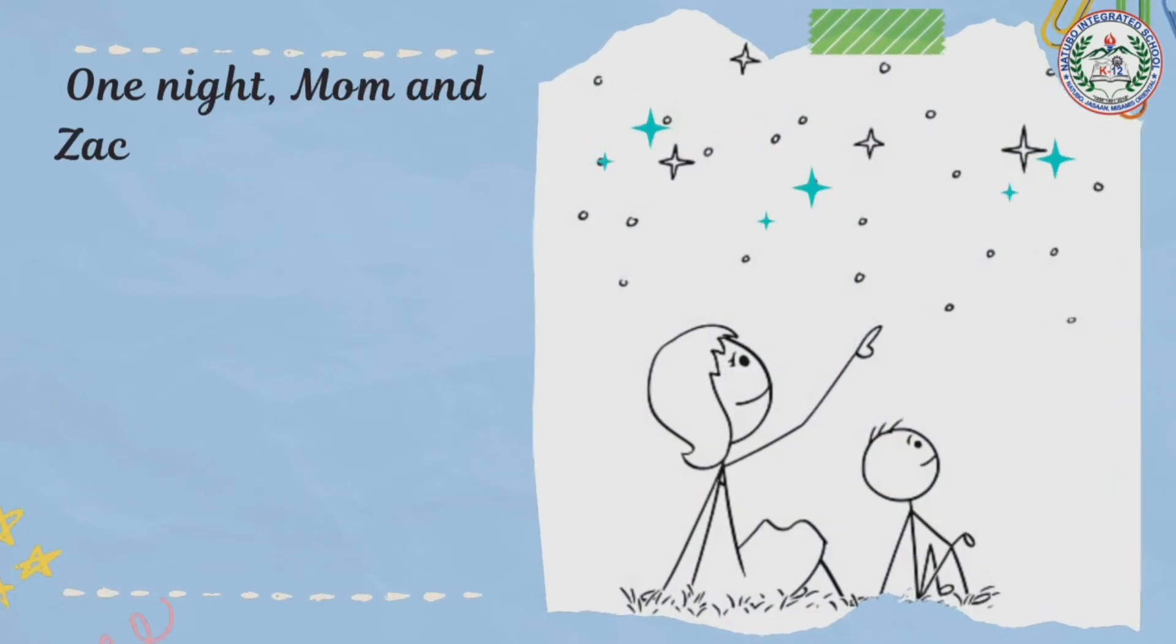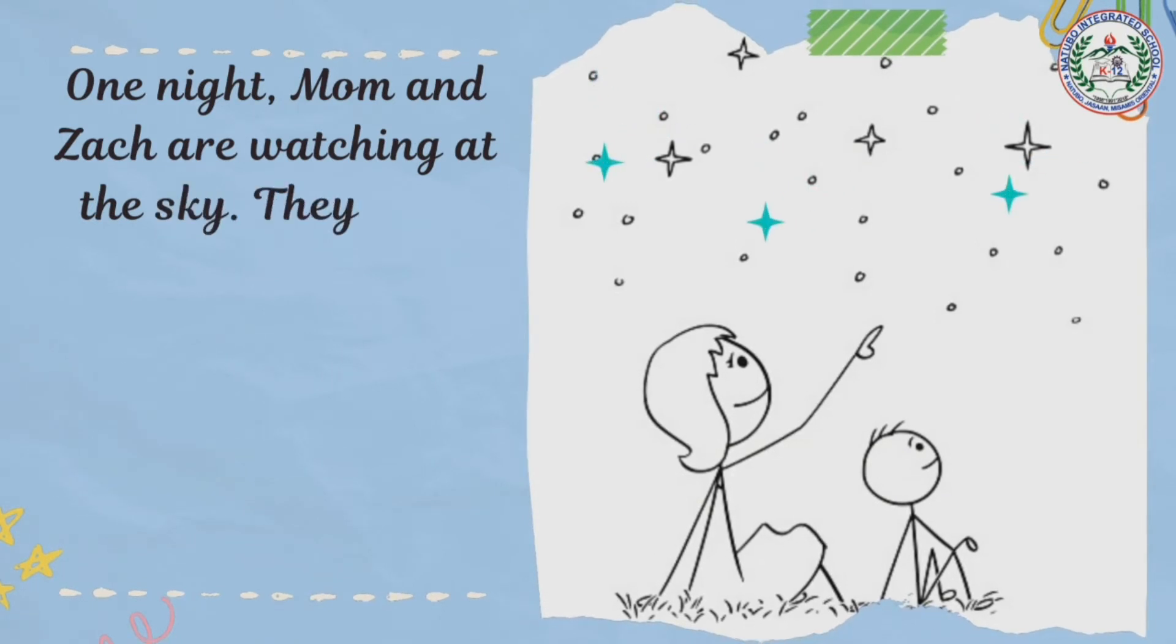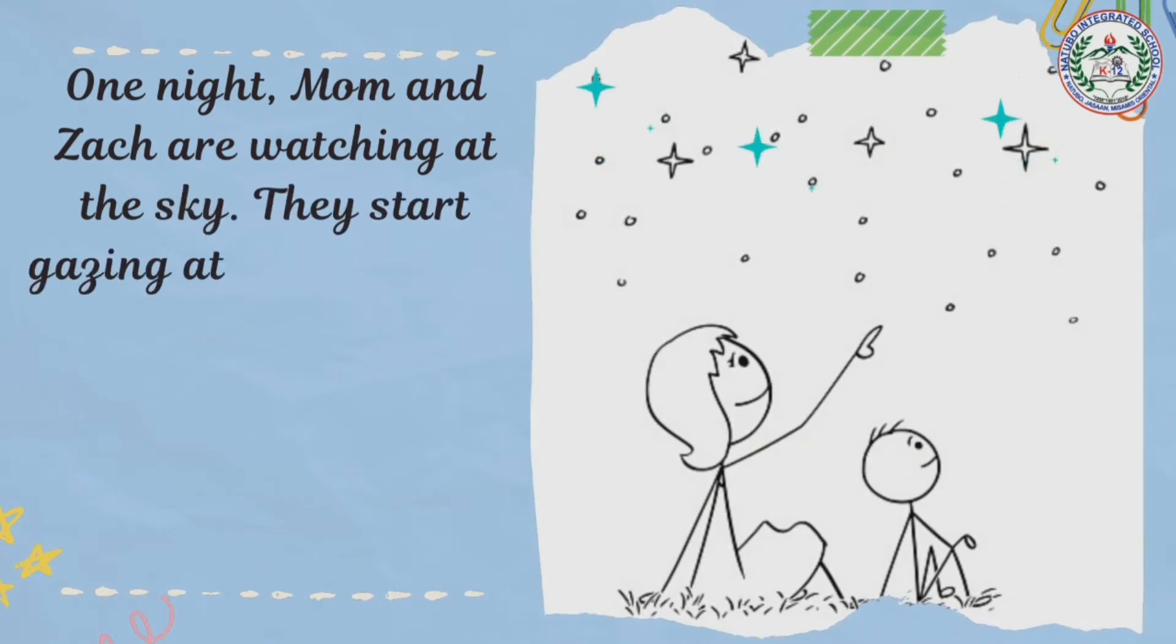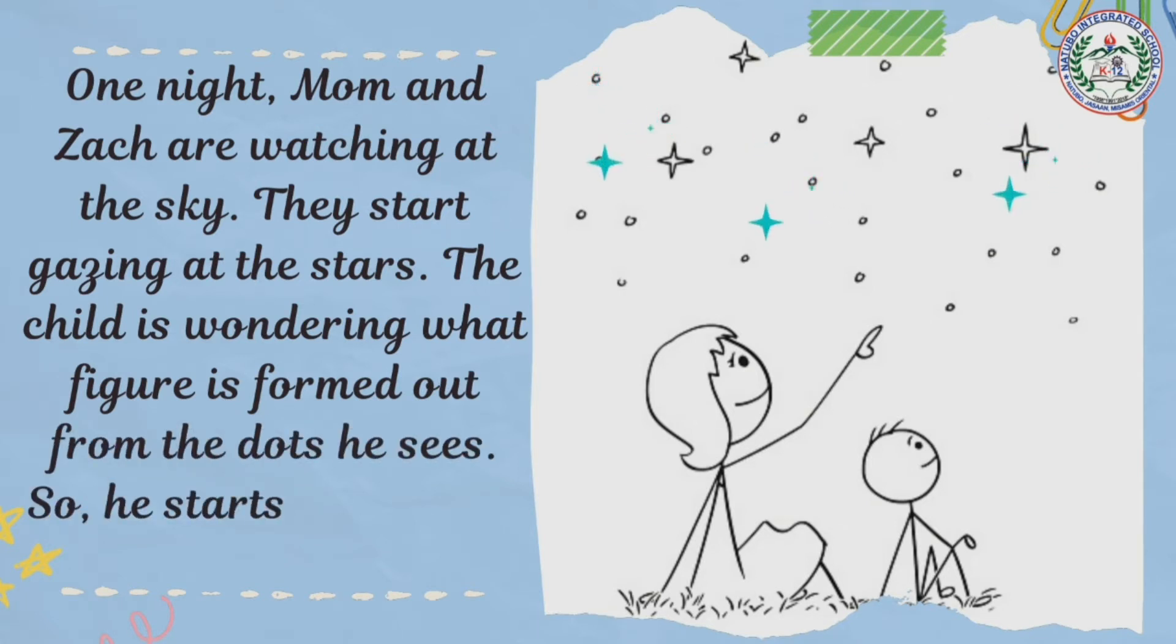Before we proceed to our lesson, listen to this short story and try to answer the questions that I will be asking you later. One night, Mom and Zuck are watching at the sky. They start gazing at the stars. The child is wondering what figure is formed out from the dots he sees, so he starts connecting the dots.